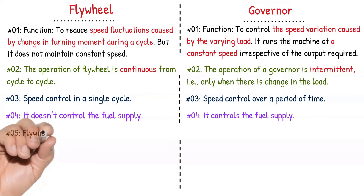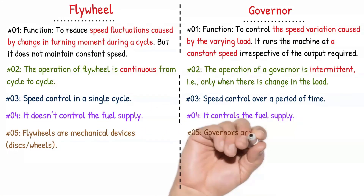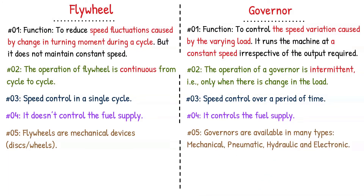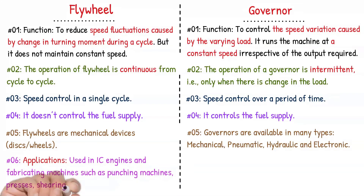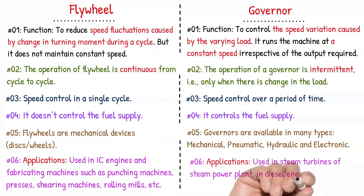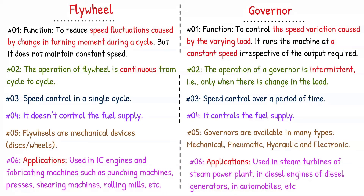The flywheel does not control fuel supply or working medium, whereas the governor controls the fuel supply. Flywheel is a purely mechanical device, whereas governors are available in many forms: mechanical, pneumatic, hydraulic, and even electronic. Flywheels are used in IC engines and fabricating machines such as punching machines, presses, shearing machines, and rolling mills. Whereas governors are used in steam turbines of steam power plants, diesel engines of diesel generators, and in automobile engines.